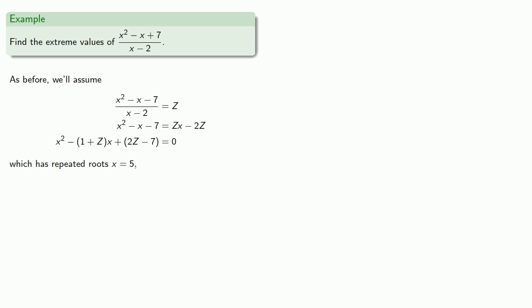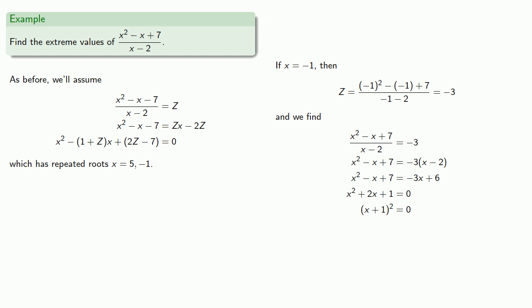Likewise if x equals negative 1, then our z value is. And solving our equation gives us. And we see that x equals negative 1 is a double root, and so our repeated roots are 5 and negative 1.